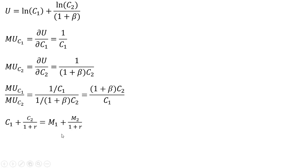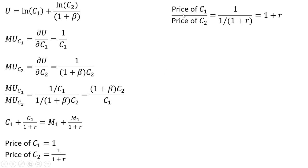Rewriting our budget constraint, we can think of the price of consumption in period 1 as just a coefficient in front of the C subscript 1 term, which is just 1. And so the price of consumption in period 2 will be the coefficient in front of the C subscript 2 term, or just 1 divided by 1 plus the interest rate. Putting together the ratio of the prices here and simplifying, we get just 1 plus R.